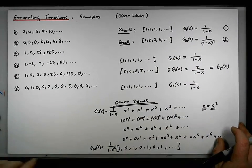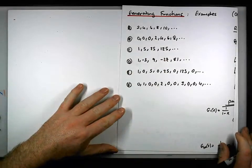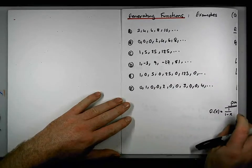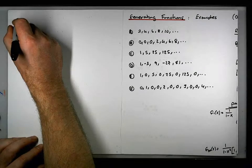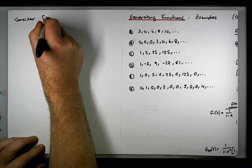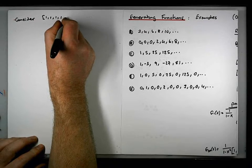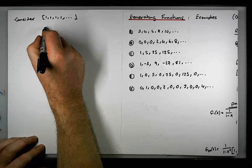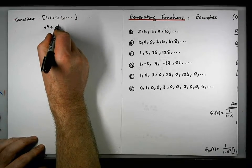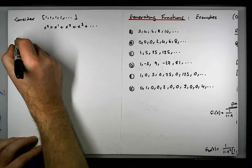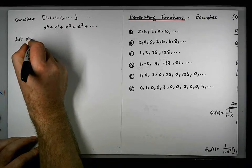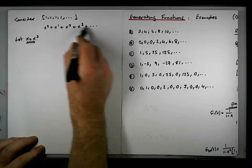What about introducing x³? Let's see the effect of that substitution, and then we're ready to start the problems. Consider again the sequence 1, 1, 1, 1, … whose power series is x⁰ + x¹ + x² + x³ + … and let's make the substitution x → x³, so we're substituting x³ for every x in this sequence.